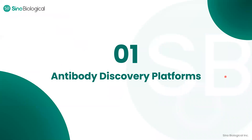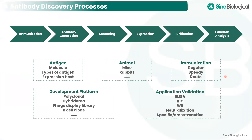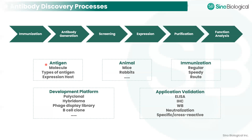The antibody discovery is a very long process, starting from the immunization and antibody generation, screening for positive antibodies, and the expression and purification of the antibodies for future functional analysis. Each step contains multiple decisions you have to make before the experiment. For example, for the immunization part, there are plenty of antigen choices such as proteins, peptides, DNA, and also cells.